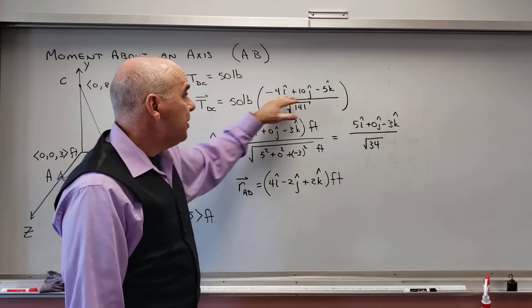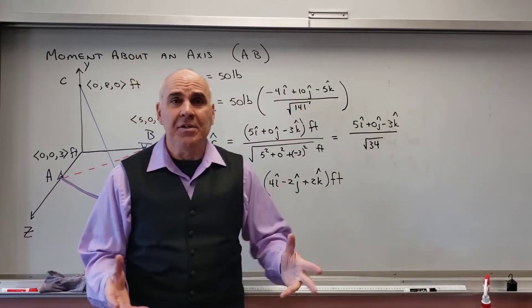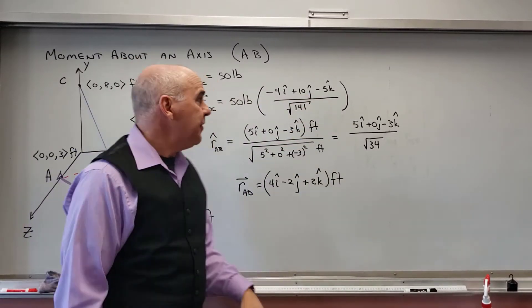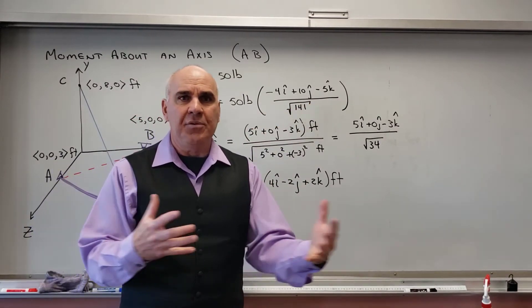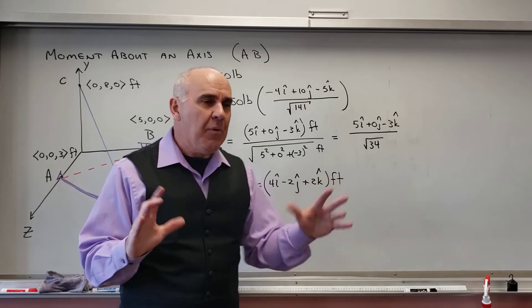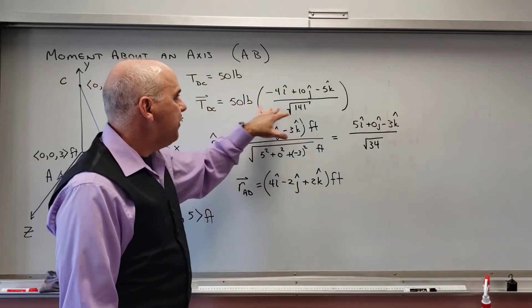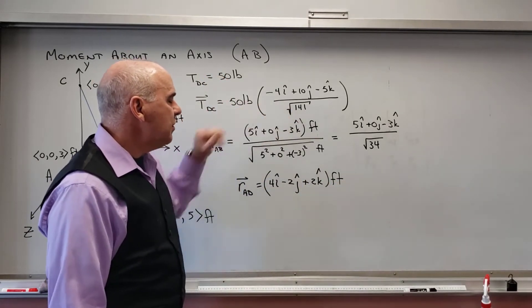So I'm just going to leave it in this format. You can multiply it out, divide by the square root of 141, and you're going to get this ugly decimal place. I don't want to do that. I want to keep life simple. So I'm going to leave the 50 and the 141 just the way they are.